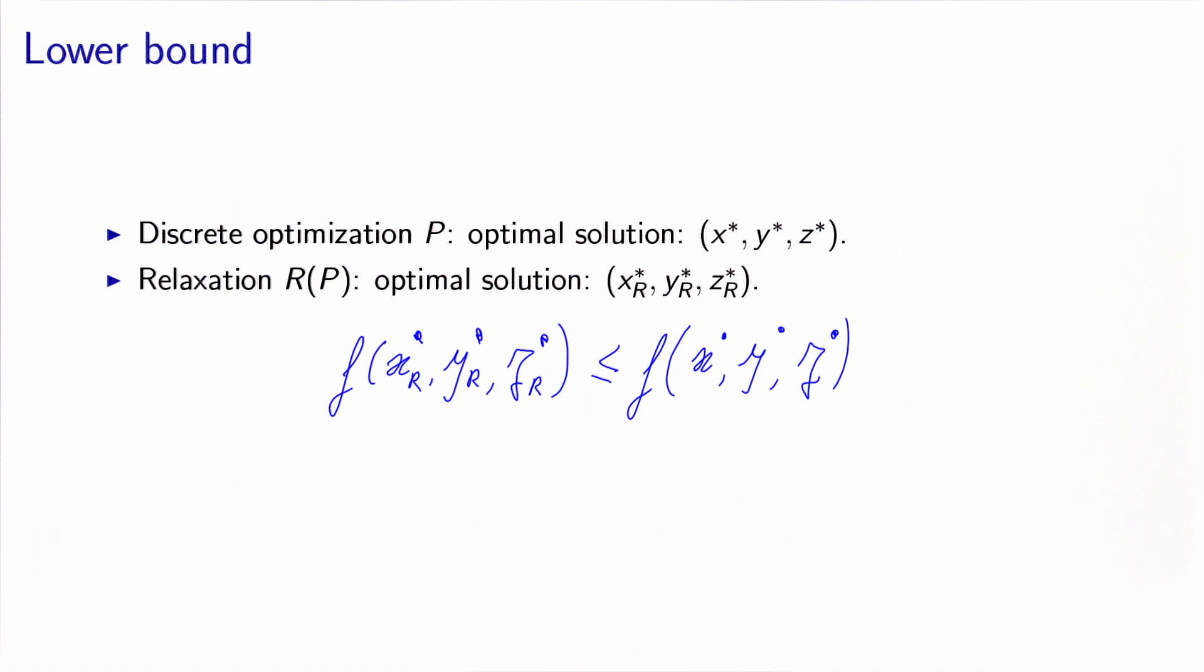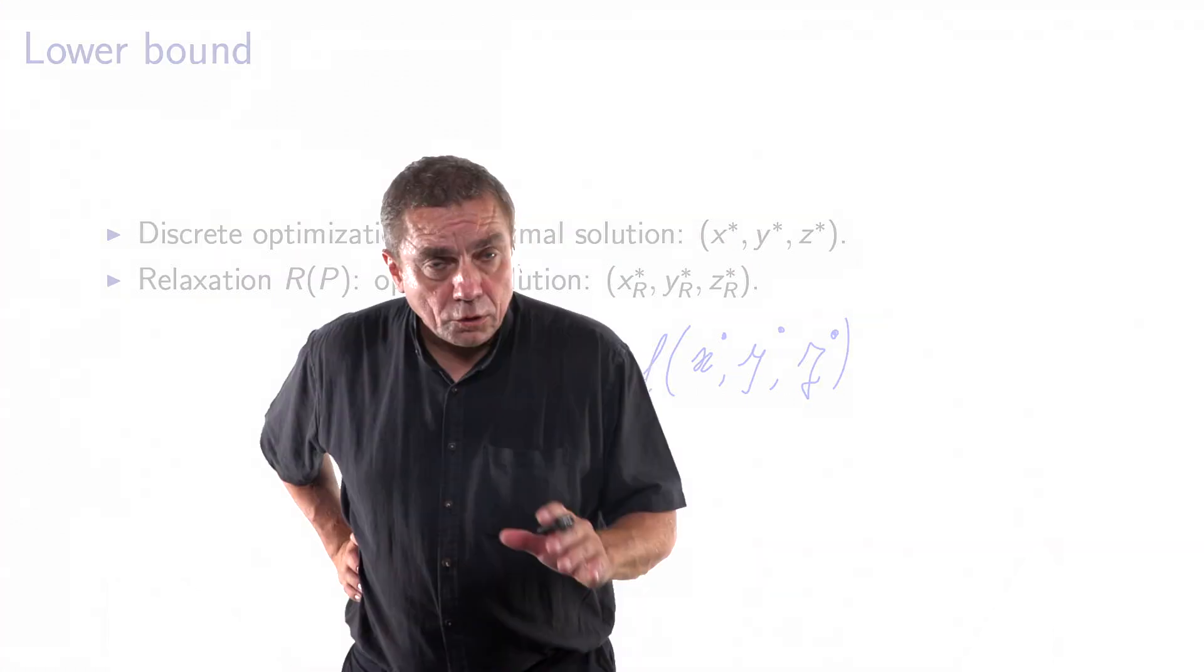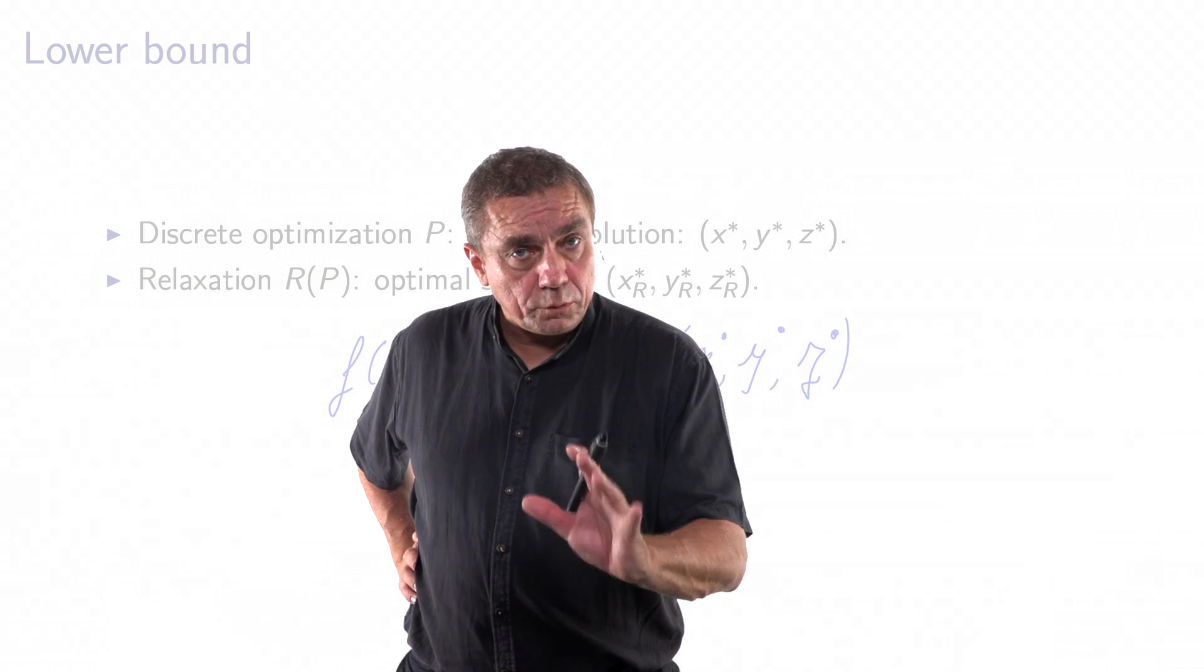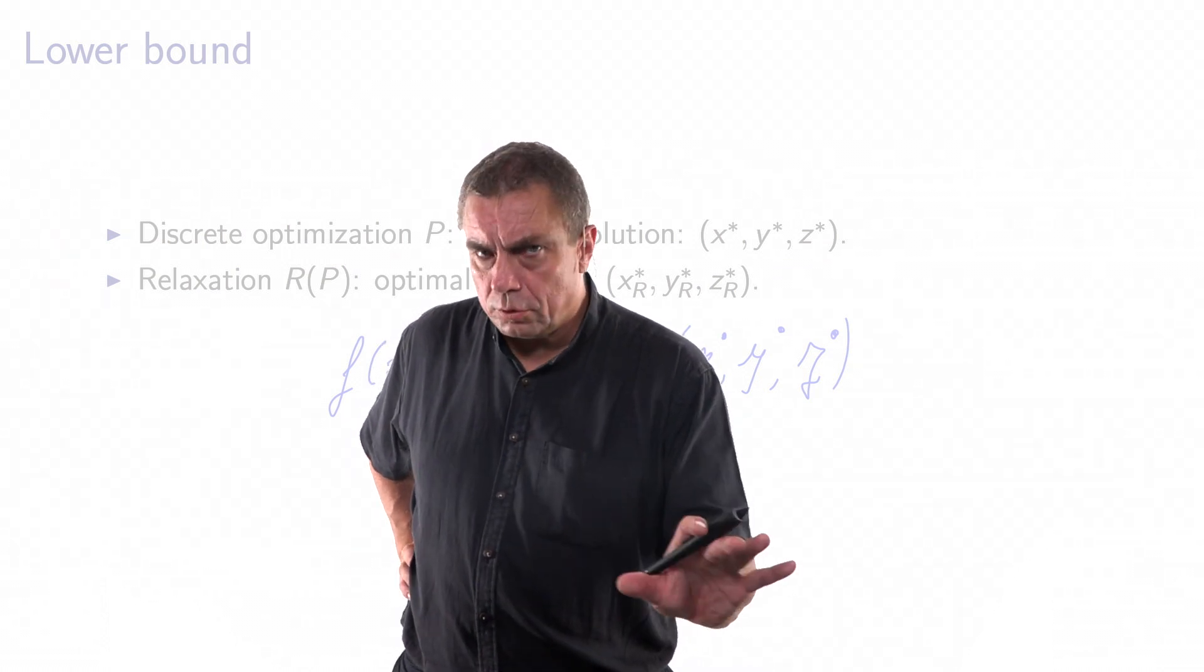And the reason is that x*, y*, z* verifies all the constraints of the relaxed problem, because the relaxed problem has less constraints than the original one. Therefore, it's a feasible solution for the relaxed problem, and because this is the optimal solution of the relaxed problem, it must be less or equal. Note that this result is valid only if we are talking about global minima, not local minima.